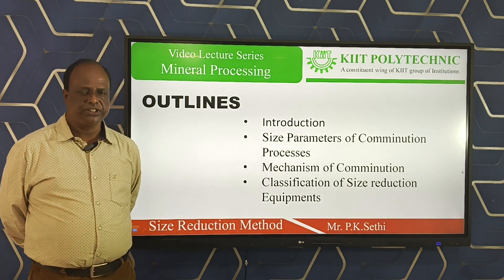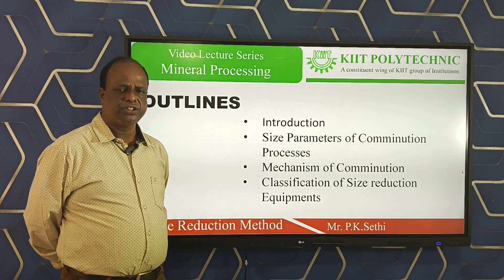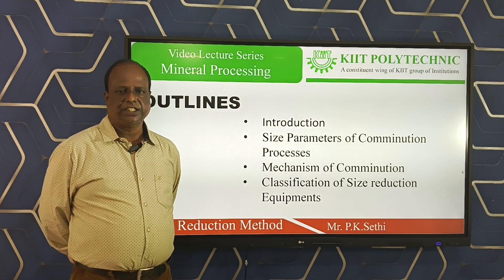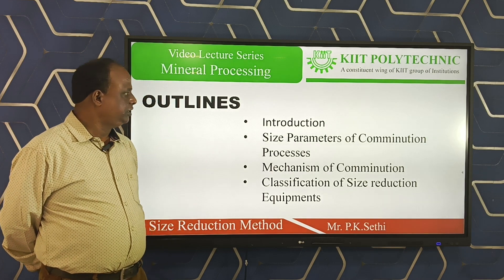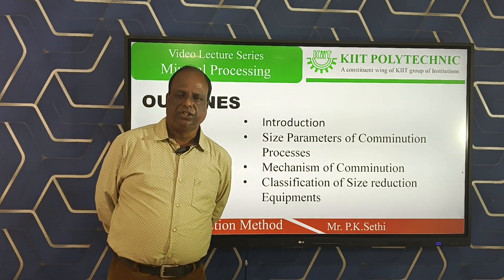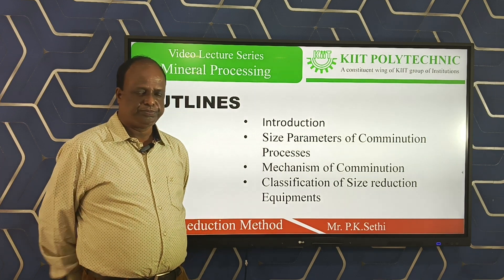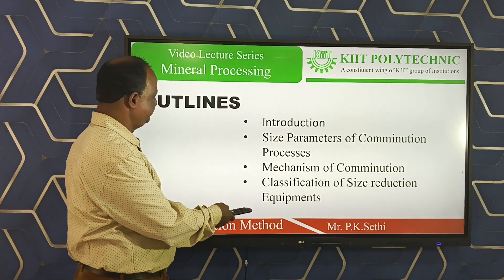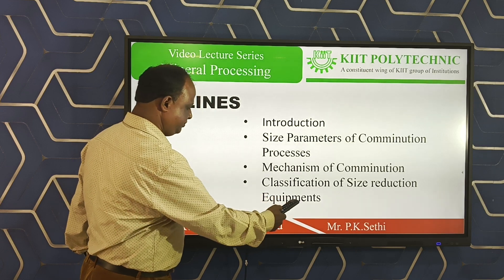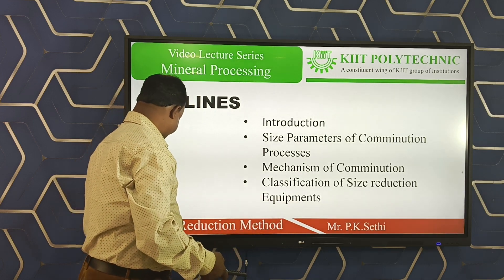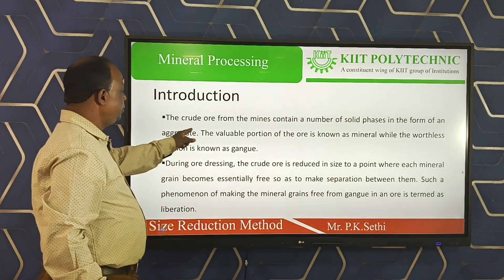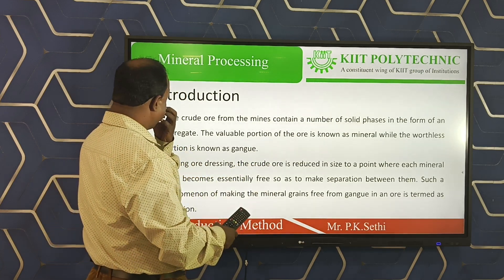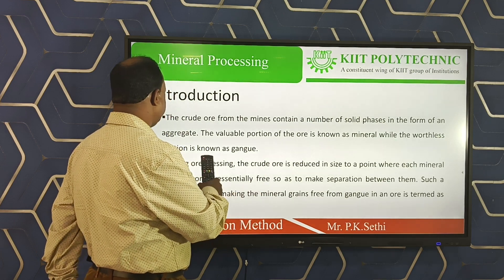This separation is carried out by a process known as the comminution process, or it is called the size reduction process. The comminution process means the size reduction process in which we have to reduce the size of ore from large size to small size. This size reduction helps to separate the gangue from its ore. The crude ore from the mines contains a number of solid phases in the form of an aggregate.